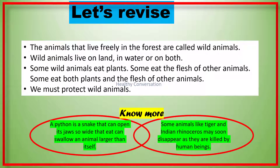Now let's revise. The animals that live freely in the forest are called wild animals. Wild animals live on land, in water, or on both. Some wild animals eat plants. Some eat the flesh of other animals. Some eat both plants and the flesh of other animals. We must protect wild animals.